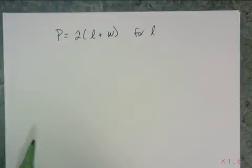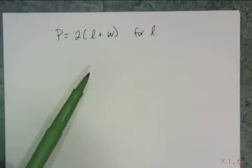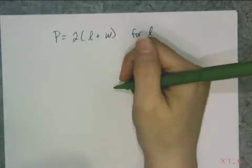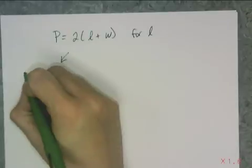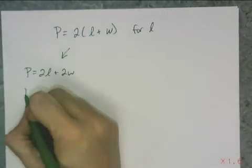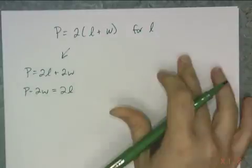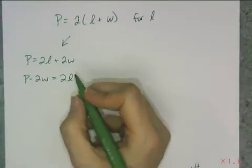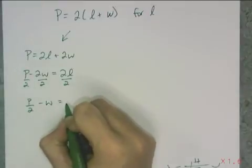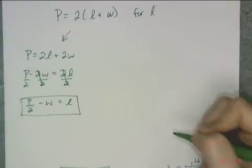Here's another formula you should recognize: the perimeter of a rectangle, P equals 2 times the quantity l plus w. I want to solve for the length. There are two ways to do this. If I choose to distribute, I get P equals 2l plus 2w. Then I subtract 2w from both sides to get P minus 2w equals 2l, and divide both sides by 2 — splitting it piecewise — to get P over 2 minus w equals l.